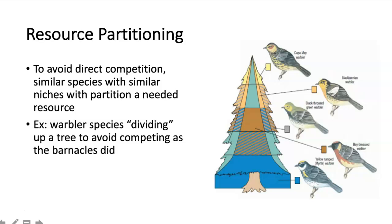Related to competition is resource partitioning. Sometimes when you have very similar species — such as the warblers shown on the right — seeking resources within the same general location, they might divide up that location so they are not directly competing. You can see where they've taken up certain parts of the tree. The Cape May warbler prefers the upper part of the tree towards the outside, whereas the black-throated green warbler prefers the edges to the middle of the tree. This helps reduce direct competition while still providing resources for very similar species.